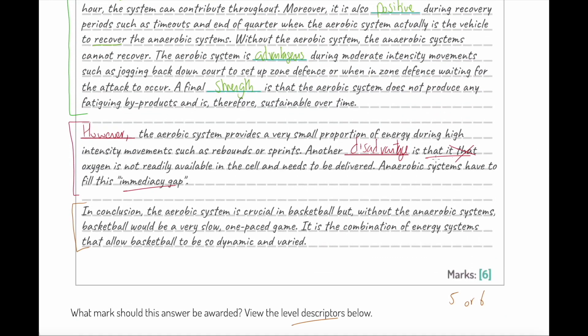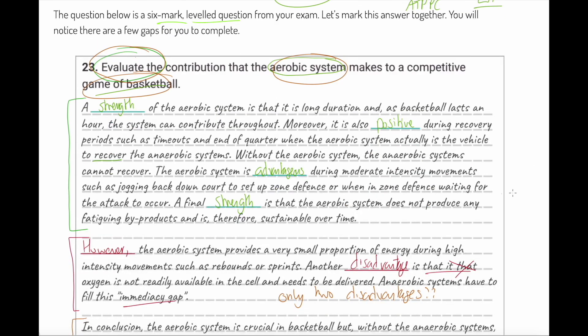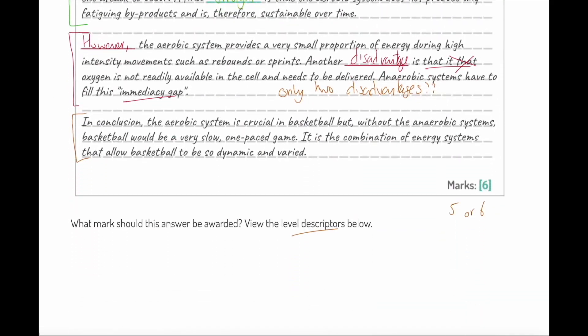The question is: are they in the top band? Are they worth five or six? If we were being super harsh, we could say there were only two disadvantages. But then we could say they've made four strengths, at least two disadvantages, a relevant conclusion. Let's be fair and give this person the six out of six they deserve. Could you see why if this person had not done any disadvantages, maybe just one strength, one weakness, this would be a two or three out of six answer? We've got to fulfill that criteria. It's easy learning about the aerobic system, but structuring your answers into an evaluative structure is a good one.